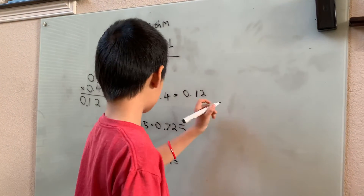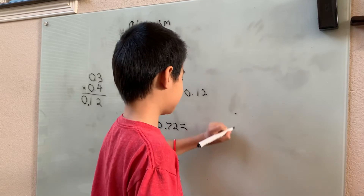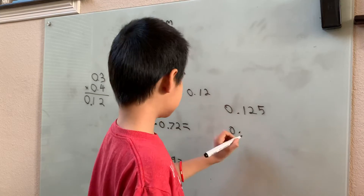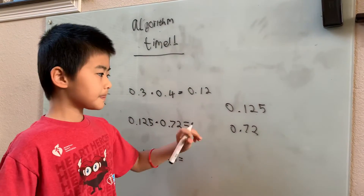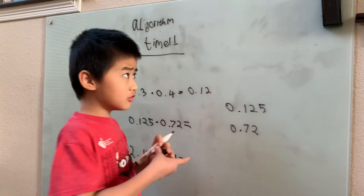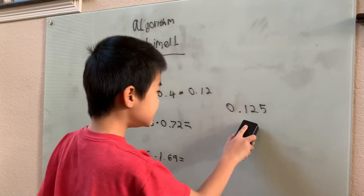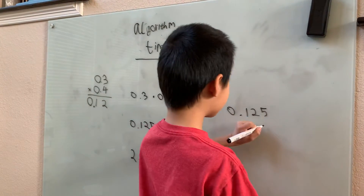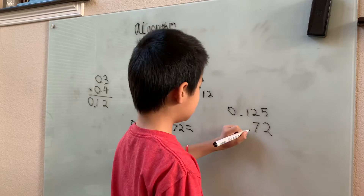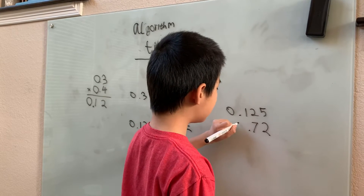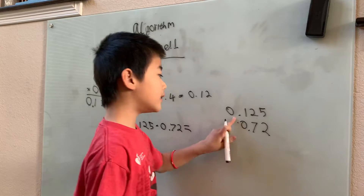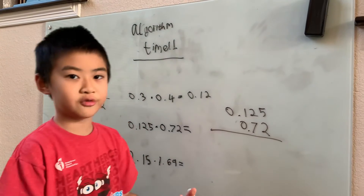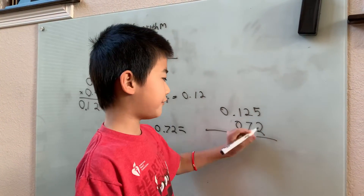Now let's move on to something a little harder. Instead of lining up the decimal points as usual, we're going to use the regular multiplication algorithm. We line them up like normal integer multiplication — 0.125 and 0.72 — and we're going to forget about the decimal points for a moment and just multiply as integers.